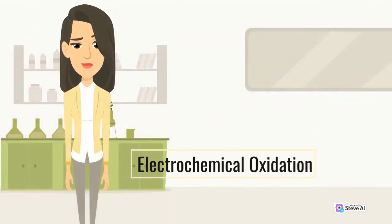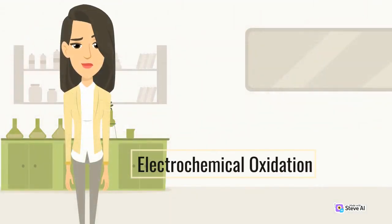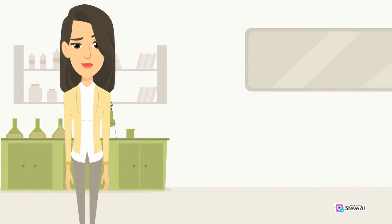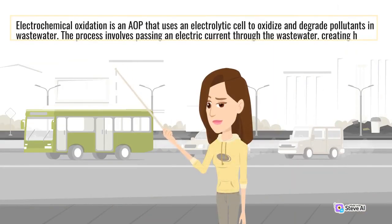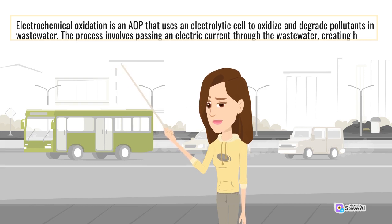Electrochemical oxidation is an AOP that uses an electrolytic cell to oxidize and degrade pollutants in wastewater. The process involves passing an electric current through the wastewater,